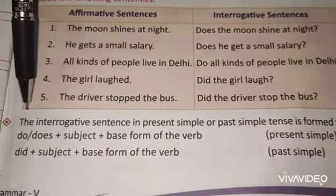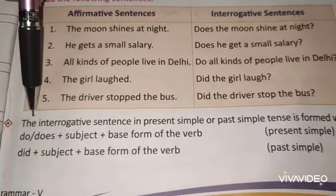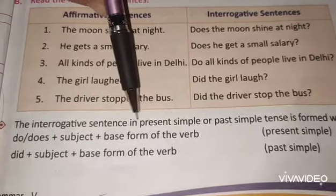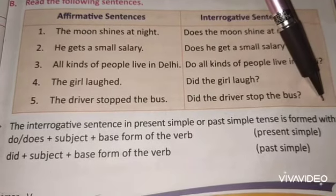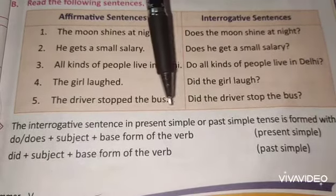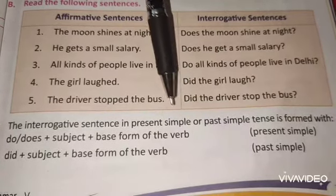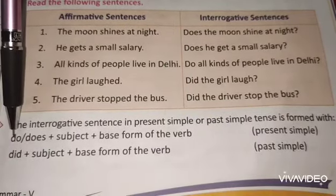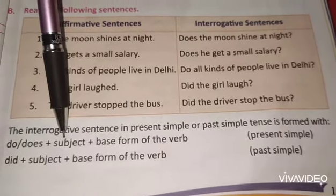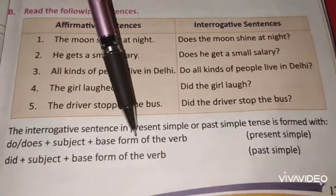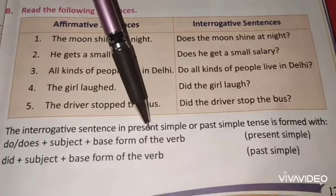Now children, you should remember this. The interrogative sentence in present simple and past simple tense is formed with: do or does + subject + base form of the verb. For example, 'The moon shines at night' — shines is there, so we write: does + subject (the moon) + shine at night? Question mark.